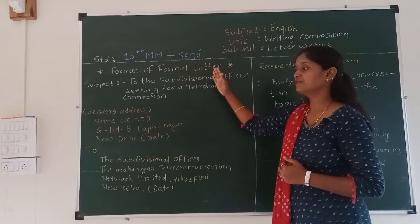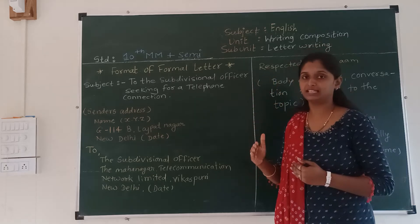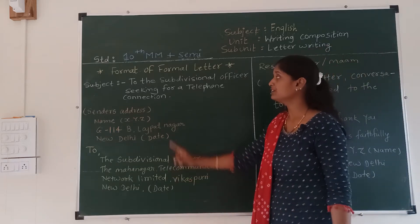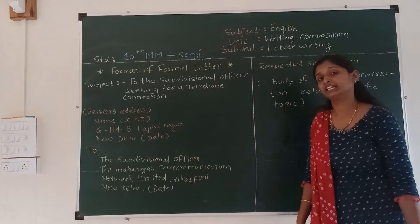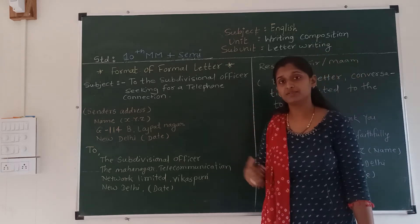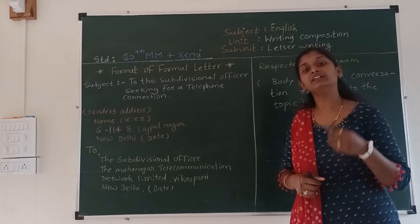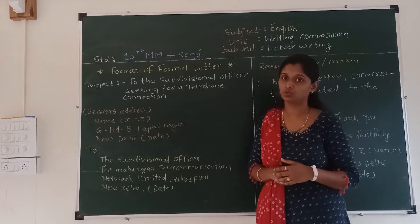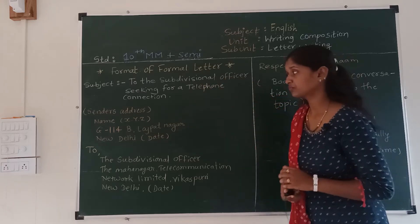Today we are going to learn the format of a formal letter. Here is one format. The subject here is: to the subdivisional officer, seeking for a telephone connection. Here you have to write a letter to the telephone officer — seeking for a new telephone connection, meaning a new landline connection. This is the subject of the letter.